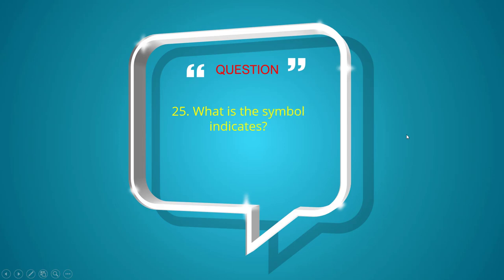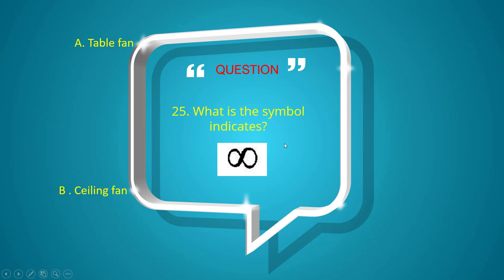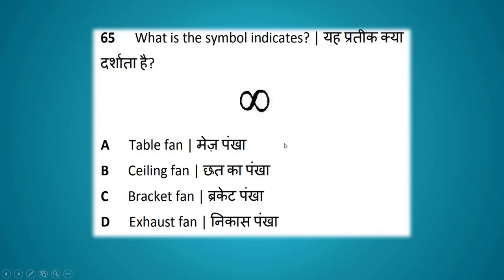What does the symbol shown indicate? Options: table fan, ceiling fan, bracket fan, exhaust fan. The answer is ceiling fan.